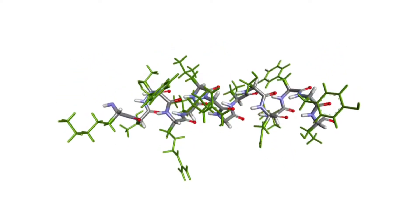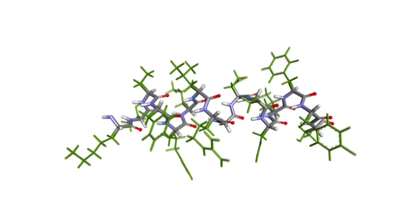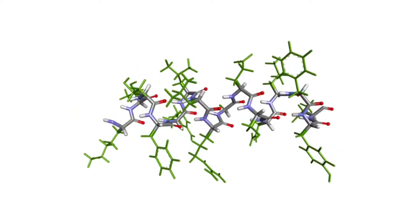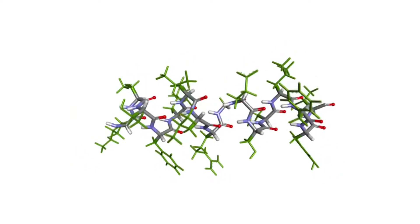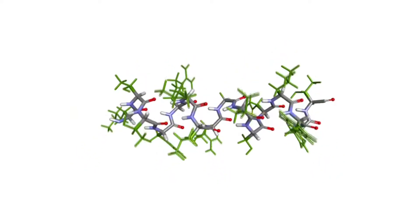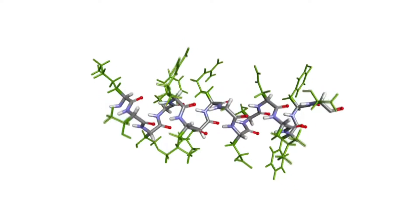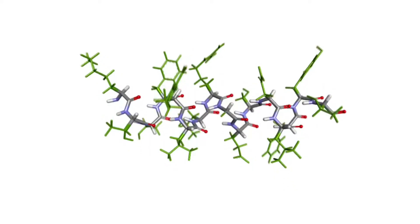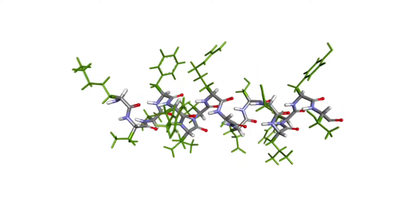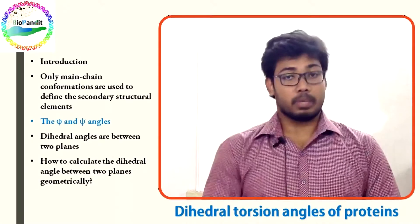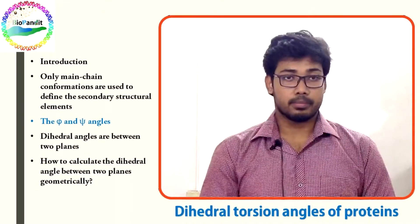As you know, the planar peptide units do not rotate. What I want you to notice here is how the two covalent bonds associated with the C-alpha atoms rotate and create the helical rotation of the peptide backbone.